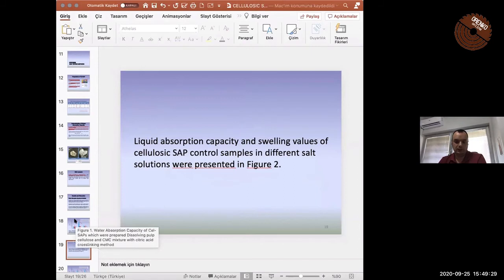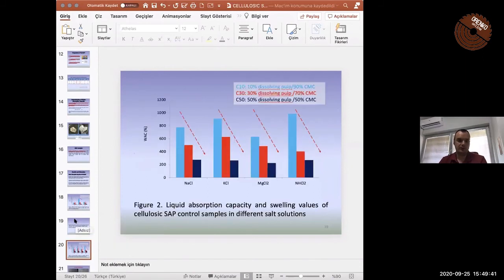Figure two shows the results. Similarly to results in figure one, liquid absorption capacity of SAP decreased by the addition of more cellulose to SAP. On the right side of the screen, SAP dechloramine was the most swelling effect on the produced SAPs.